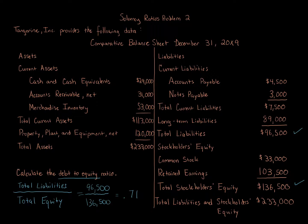We want this number to be as low as possible, especially if you're a lender looking at the business. If this number is high — if it's over one — that means the liabilities exceed the equity, so the debt portion is higher. If you're a lender considering lending money to a business that is already over-leveraged, it's more debt than equity, which means that if something happens to the company, the debt has to be paid by law.